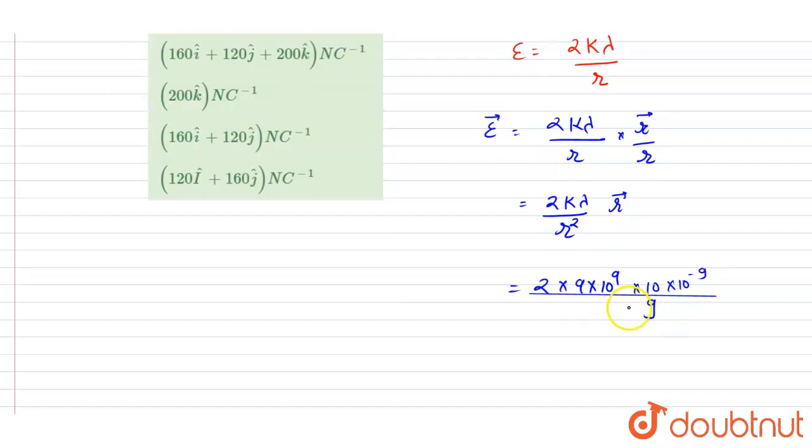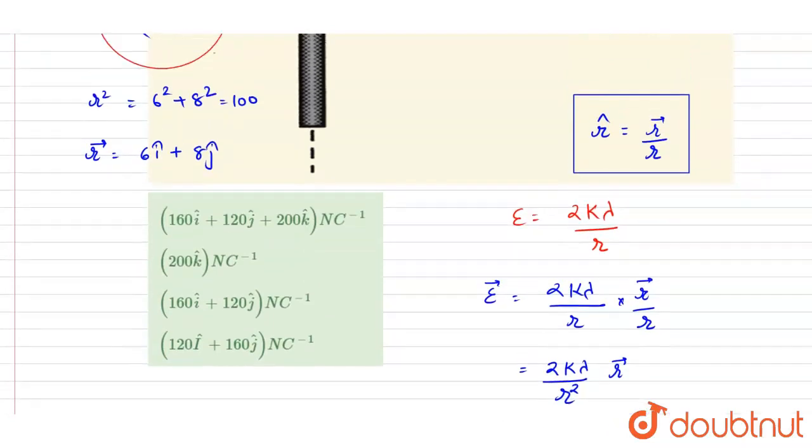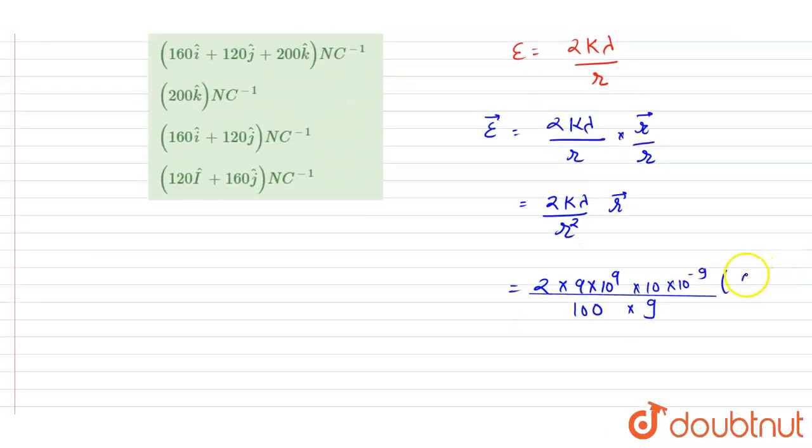r² is 36 + 64, it will be 100. So I will write down here 100 for r², and this is 6î + 8ĵ.